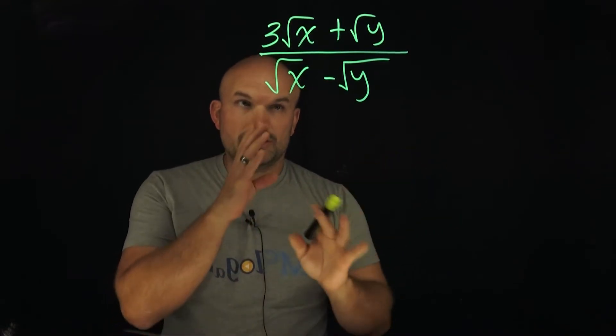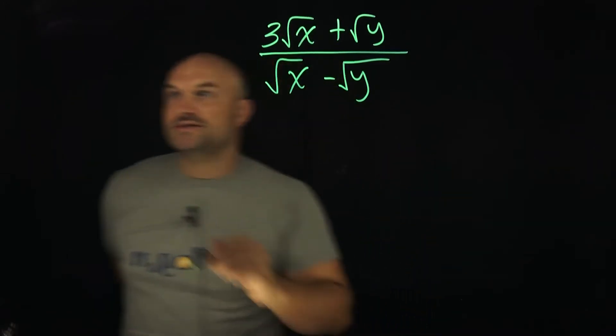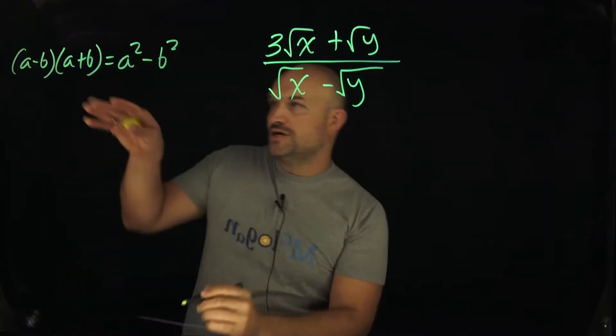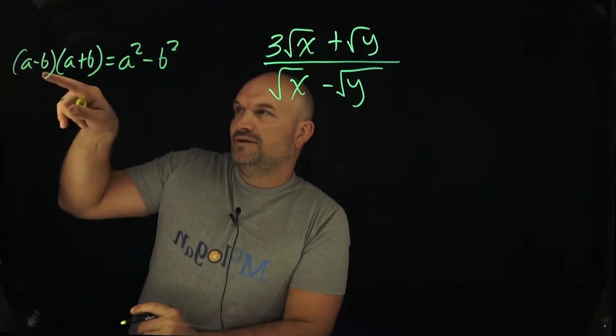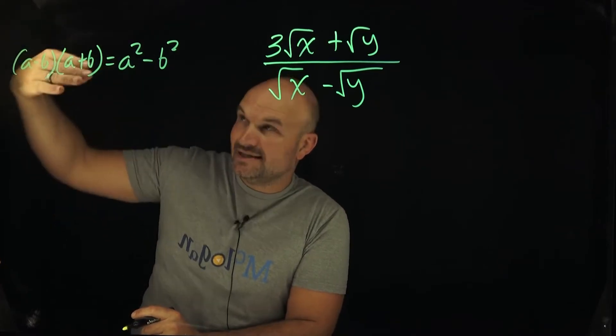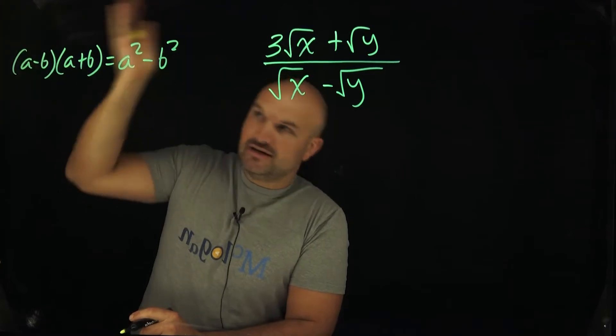There's a couple things I want you to know about rationalizing the denominator. The first thing is understanding the difference of two squares. So whenever I have a binomial times a binomial, and in this case it's a minus b times a plus b, notice I have a and b that are exactly the same. When I multiply that out, when I apply distributive property or FOIL, I'm going to get a squared minus b squared.